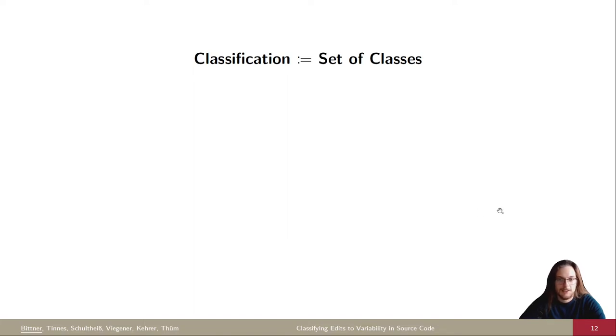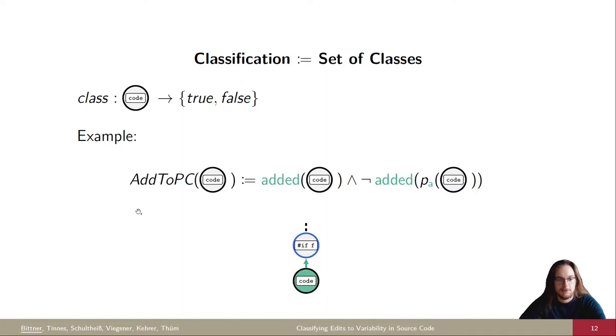So formally, we define a classification as a set of classes, as usual, where a class assigns one code artifact, one code node to true or false. So it's a predicate that tells us whether this code node belongs to this class. As an example, we introduce the add to PC class, add to presence condition for short, which tells us for a source code fragment, if it was inserted and its parent wasn't inserted, which means that it was added to an already existing variability annotation. So here on the bottom, you see an example where code was inserted below an already existing annotation.